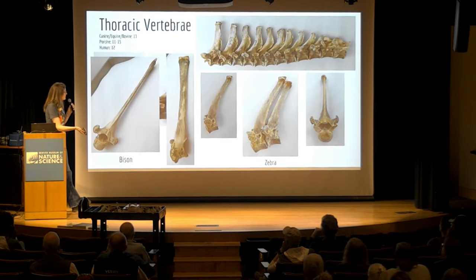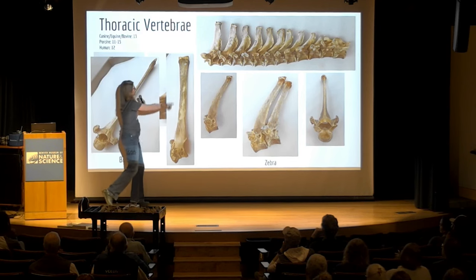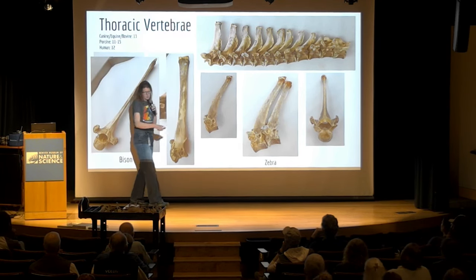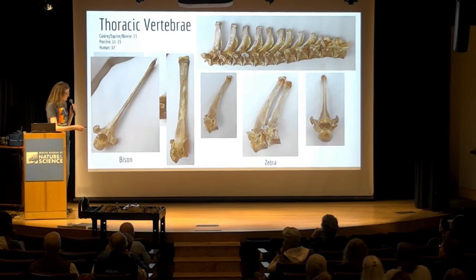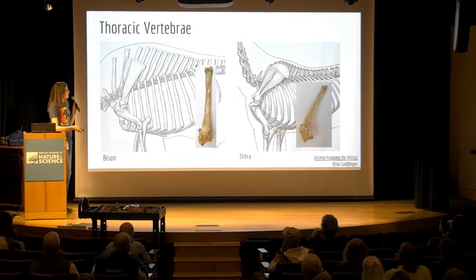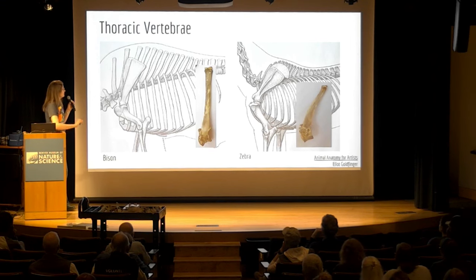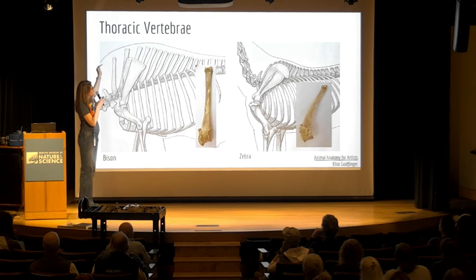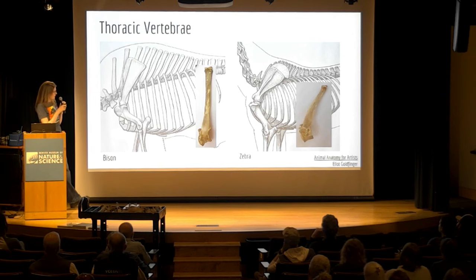Here are the other taxa. The bison obviously has these absolutely massive spinous processes. The zebra's are less so but still pretty tall. You can really see where those big spinous processes create the hump on the bison — there's actually bone in there, then they're layered up with muscle and fat to make those big giant humps on their backs.